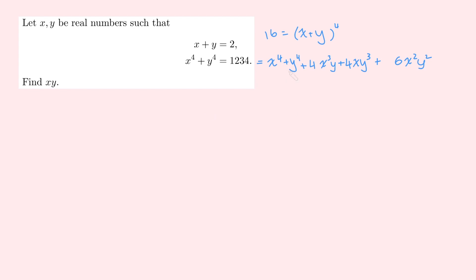So, well x to the 4 plus y to the 4 we know is 1234. And now these two terms here I'm going to factor out a 4xy from, because I can. And then I'm left with x squared plus y squared. And then this thing I'll just leave as 6x squared y squared for the time being.